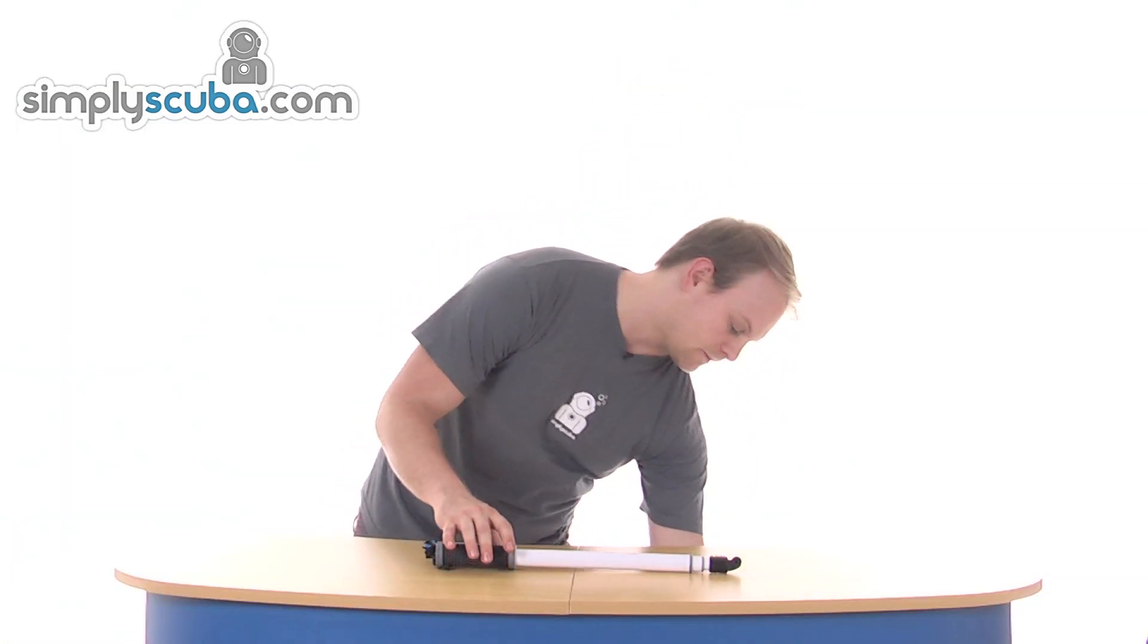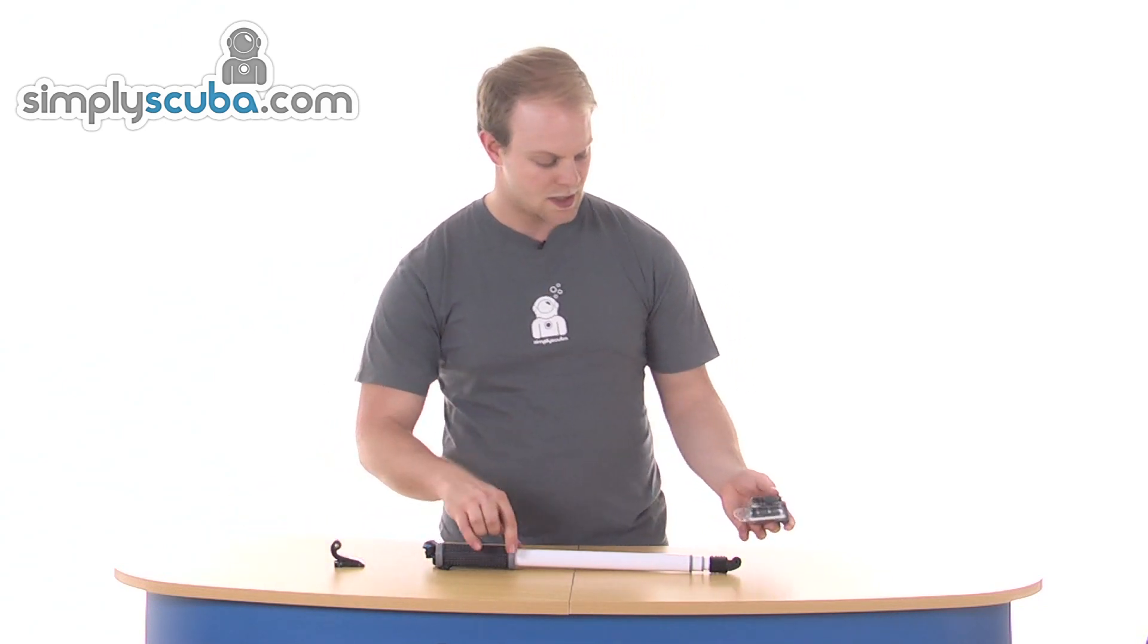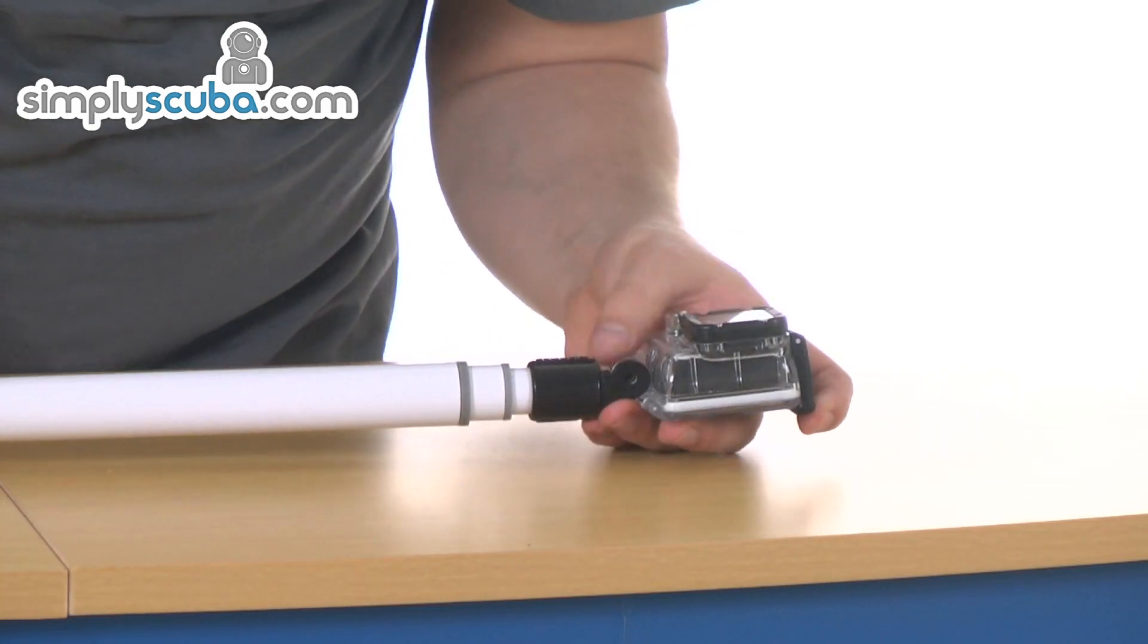So in terms of how to get the camera on, get the GoPro out here. Obviously the GoPro doesn't come with the pole itself, but just to show you how it all goes together, you simply push it through the end like so.